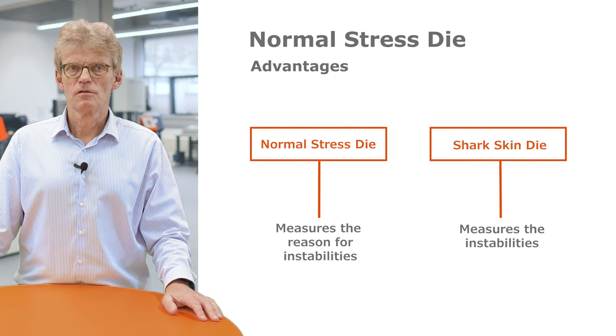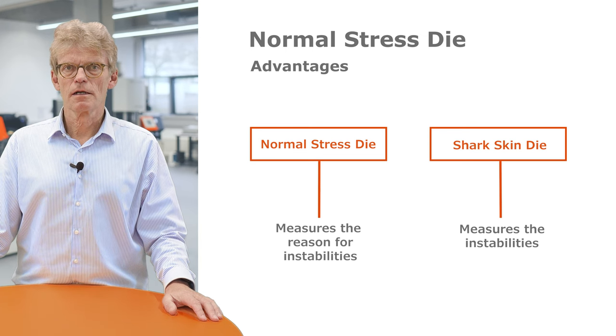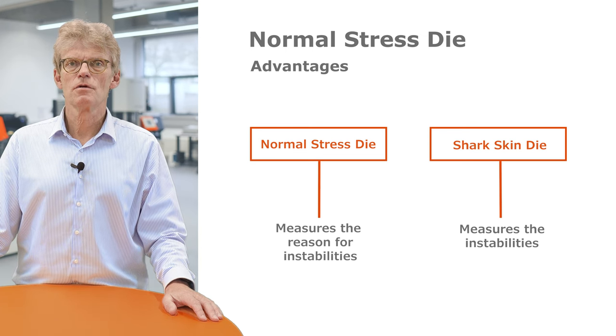The normal stress die measures directly the reason for flow instabilities, while the sharkskin die measures just the instabilities. This also allows a better analysis for compounding of material. Thank you for watching our Godfurt Roundtable. Stay tuned for another episode and have a nice day.